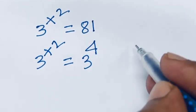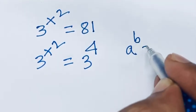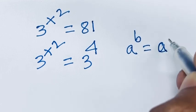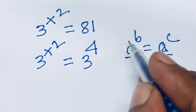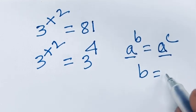According to exponential rules, we know that a to the power b equals a to the power c. Here the bases are the same, so I can say the exponents are equal. Therefore, b equals c.